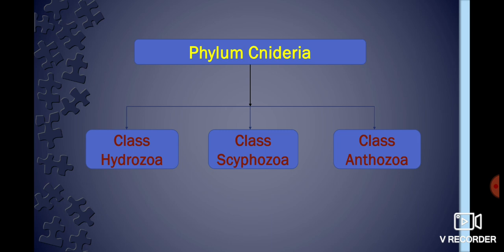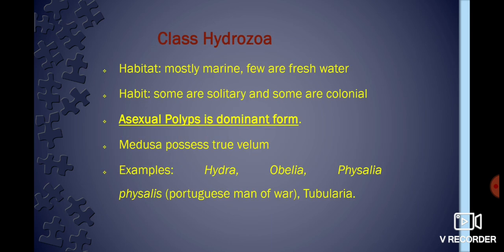Let's look at some basic characteristic features of Class Hydrozoa. Hydrozoa are mostly marine, and few of them are freshwater. They mostly live a solitary life, but some live in colonies. The asexual polyp is the dominant phase in them; the medusoid phase may or may not be present, but mostly asexual polyps are dominant. Examples of Hydrozoa are Hydra, Obelia, Physalia, and Tubularia.